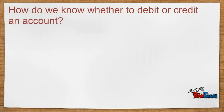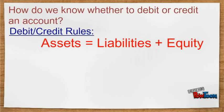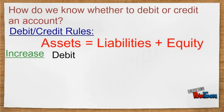The journal entry format includes the debit account name and amount written on the left side of each column, and the credit account name and amount written on the right side of each column. How do we know whether to debit or credit an account? This question brings us back to the accounting equation. When we increase our assets, this means that we are also increasing our liabilities or equity. Therefore, when we increase an asset, this is a debit. A liability account or an equity account would have a credit.